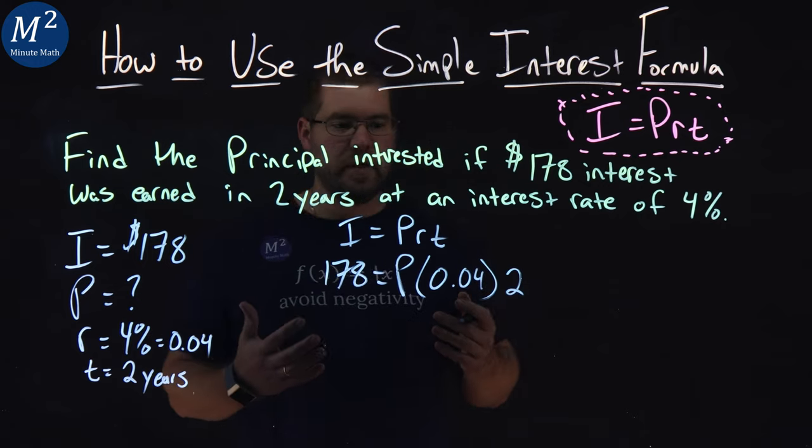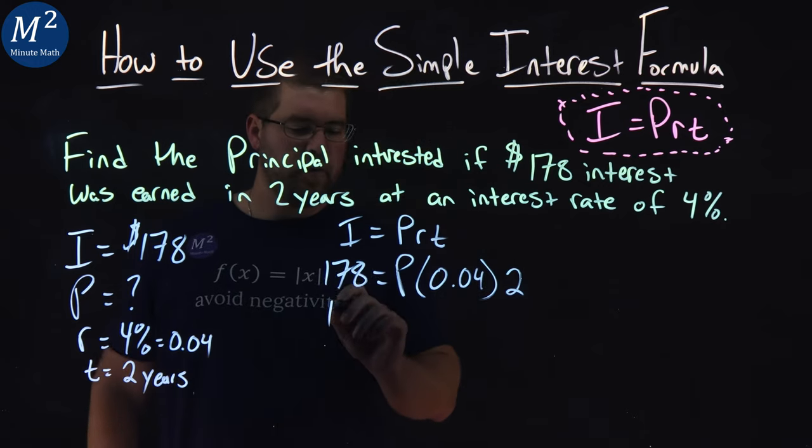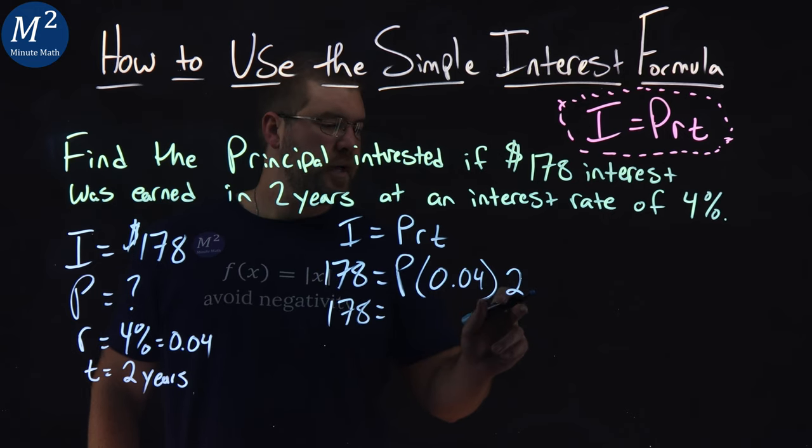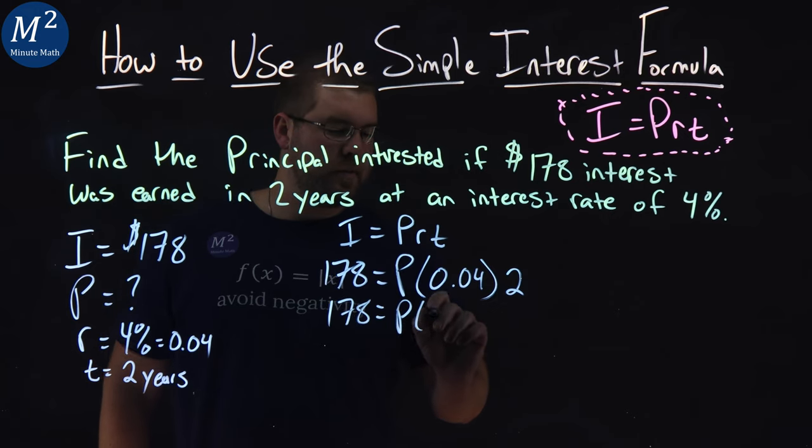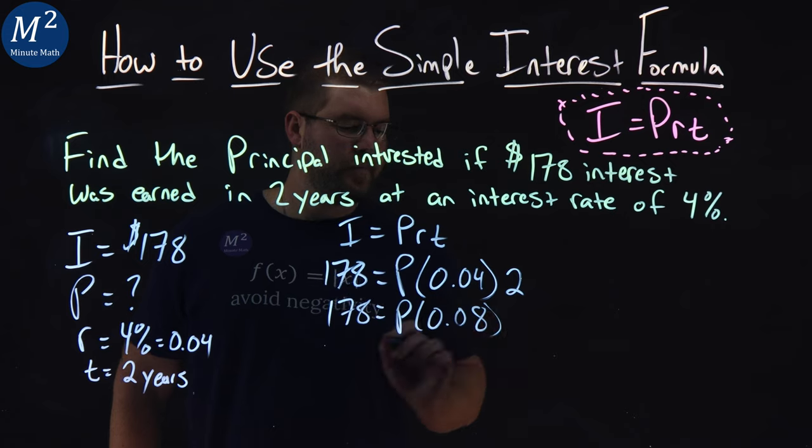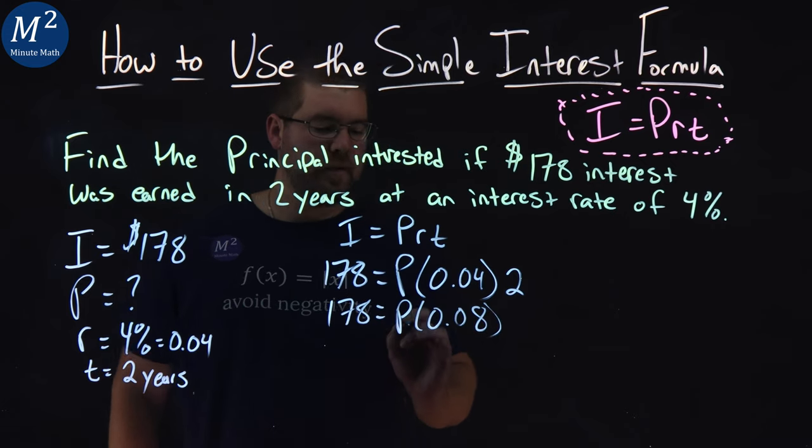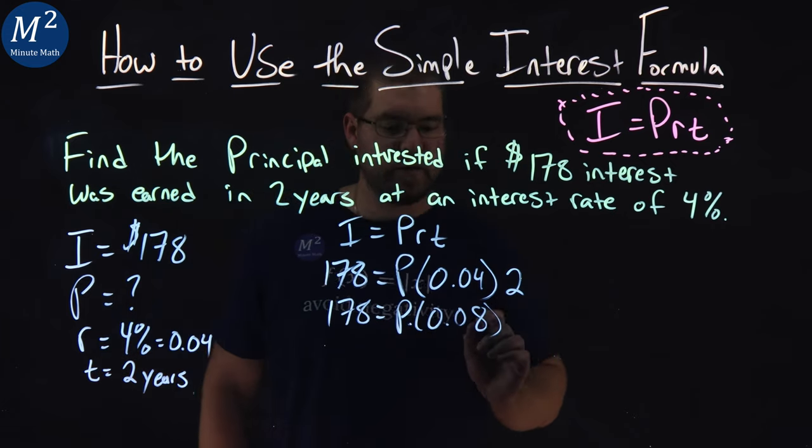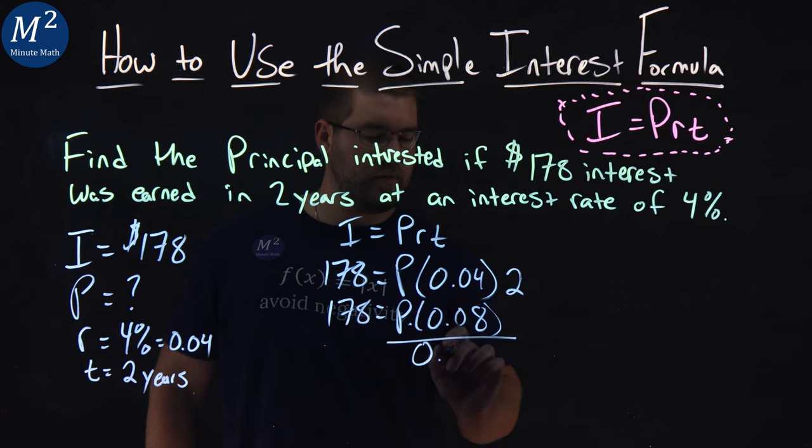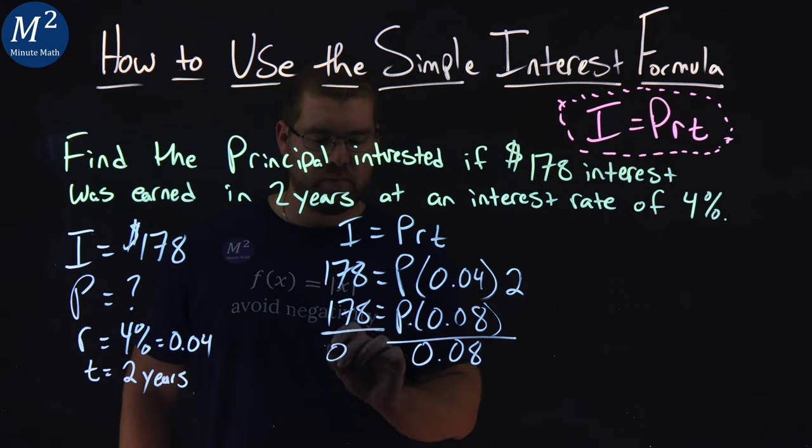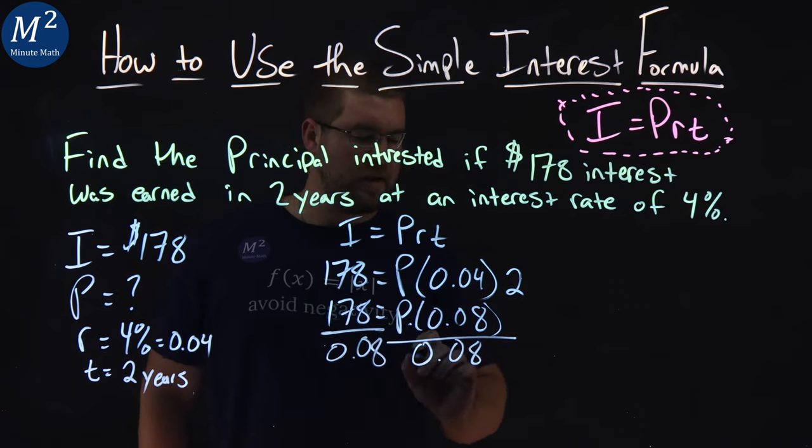Well, now we've got to solve for P. 0.04 times 2 is 0.08, so P times 0.08. Multiplication is going on here. We're going to divide 0.08 on both sides to get P by itself. That cancels.